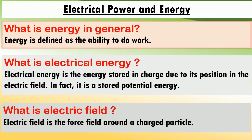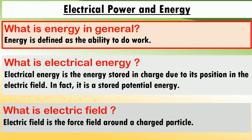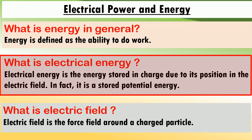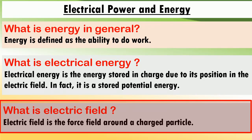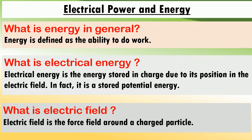First let us see what is energy in general. Energy is defined as the ability to do work. Then what is electrical energy? Electrical energy is the energy stored in a charge due to its position in the electric field. In fact, this electrical energy is a stored potential energy. An electric field is the force field around charged particles. With these basic definitions, we can understand electrical energy and power very easily.